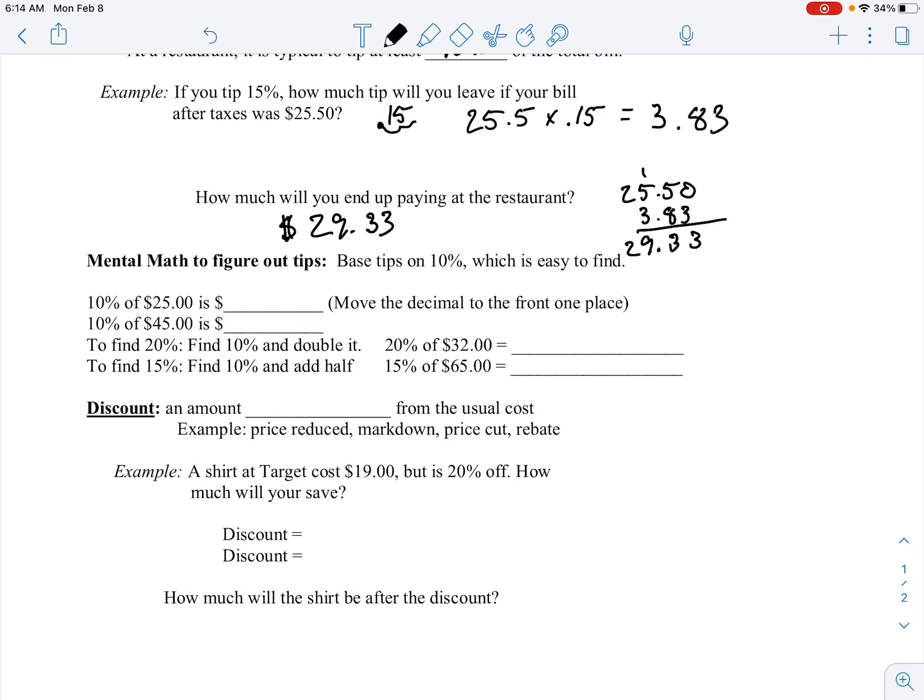So 10% of $25 is just going to be $2.50. 10% of $45 is going to be $4.50, etc.